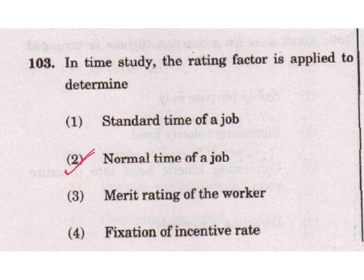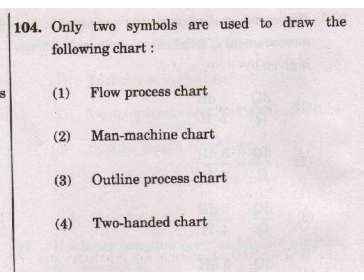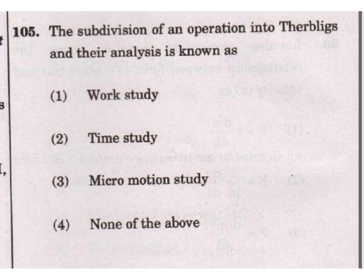Question 104: Only two symbols are used to draw the following chart: 1. Flow process chart - no. 2. Man machine chart - no. 3. Outline process chart - this is our answer. Question 105: Subdivision of an operation into Thublings and their analysis is known as: 1. Work study, 2. Time study, 3. Micromotion study, 4. None of the above. Micromotion study is our answer.